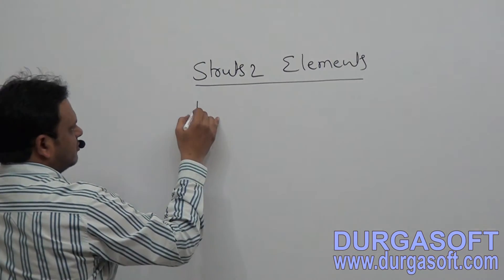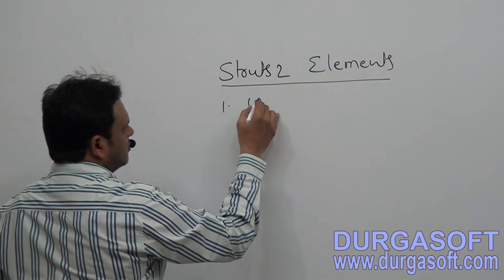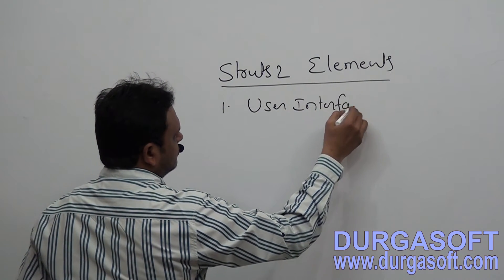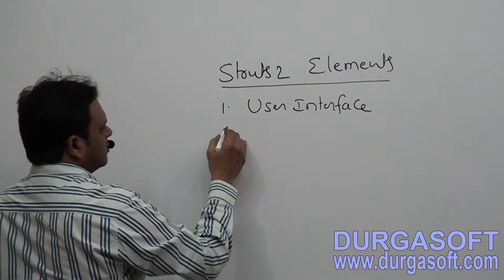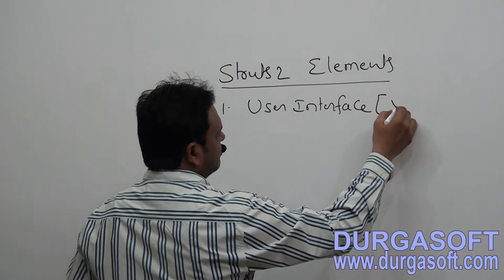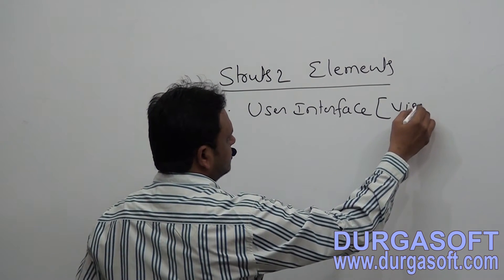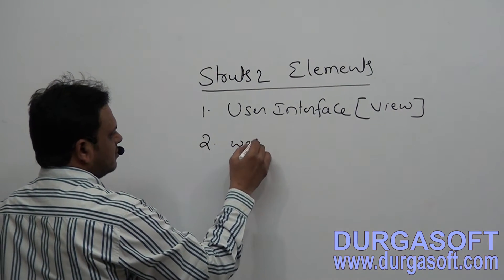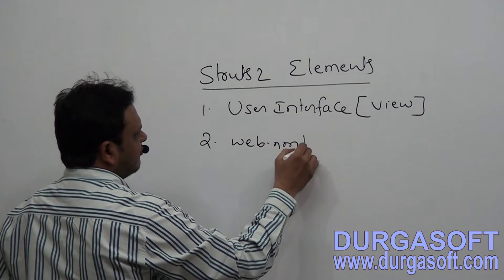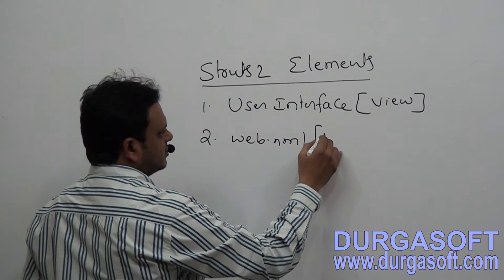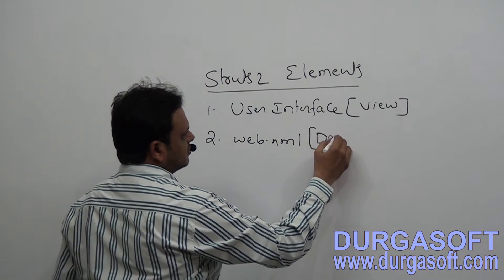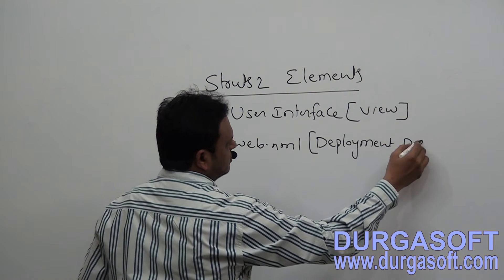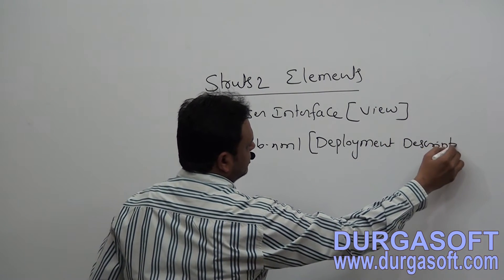The very first one: user interface is required, and this is called the viewport. The second one is the web.xml file, which is the deployment descriptor.